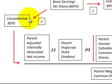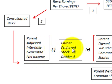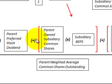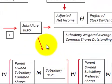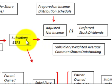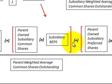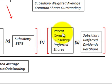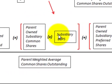Now let's look at the consolidated basic earnings per share formula. We start with the parent's adjusted internally generated net income, then subtract the parent preferred stock dividend. Next, we add the quantity: the parent's owned subsidiary common shares times the subsidiary's basic earnings per share — which we calculated from the subsidiary's basic EPS formula. We then add another quantity: the parent's owned subsidiary preferred shares times the subsidiary's preferred dividends per share.